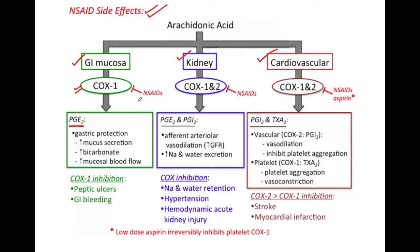When NSAIDs act on COX-1 enzymes, they inhibit the production of prostaglandin E2. By inhibition of its production, there will be inhibition of all these protective actions, resulting in peptic ulcers and gastrointestinal bleeding.